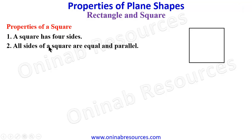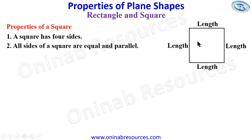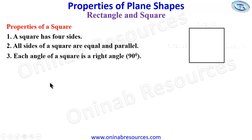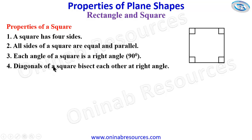The next property is all sides of a square are equal and parallel. We have stated earlier that a square has sides of equal lengths, so they are parallel also. Then the next one is each angle of a square is a right angle — that's 90 degrees. Each angle here is 90 degrees.